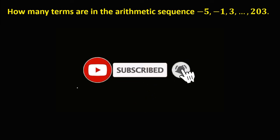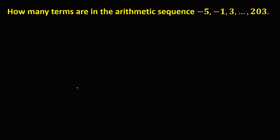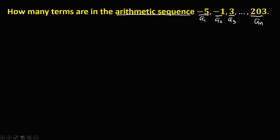So let's have this problem. How many terms are in the given arithmetic sequence? In the given sequence, the first term is a sub 1, the second term is a sub 2, the third term is a sub 3, and the last term is a sub n. Since this is an arithmetic sequence, we need to find the common difference, that's d.